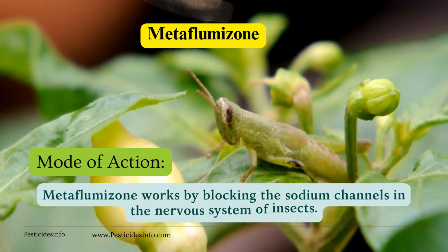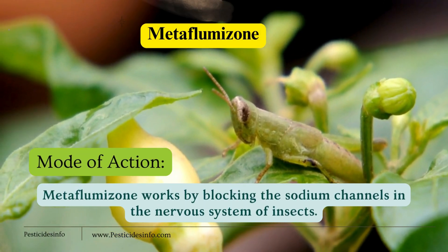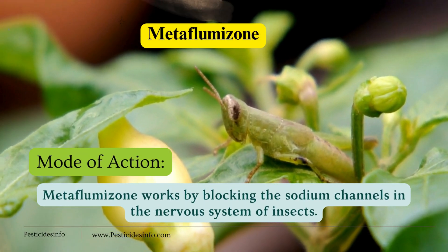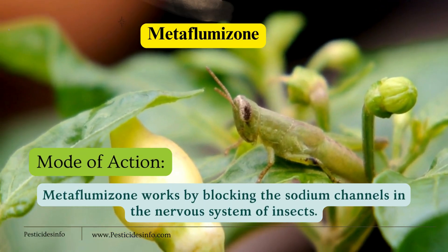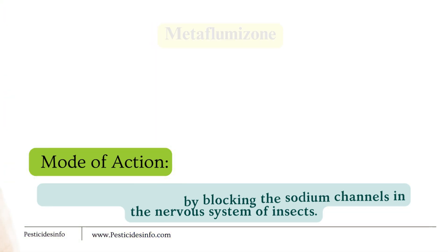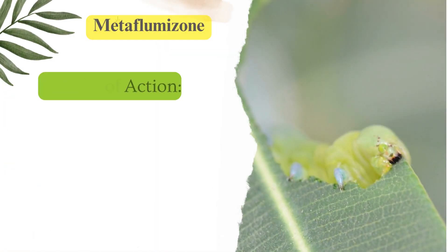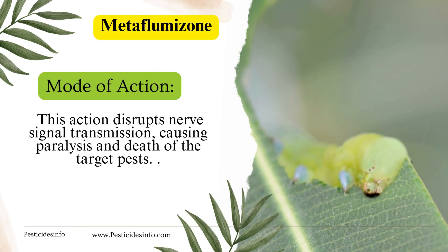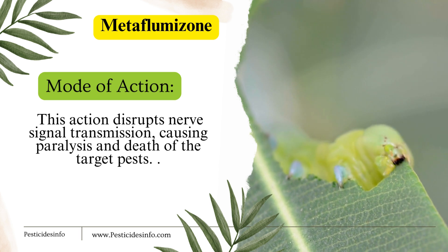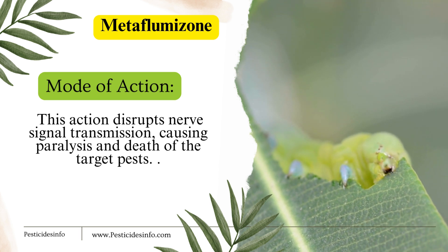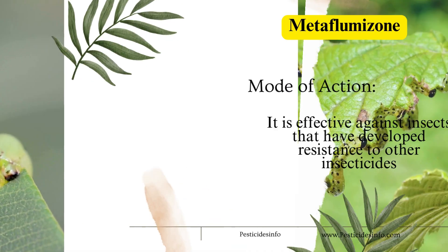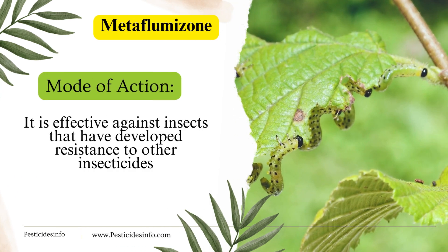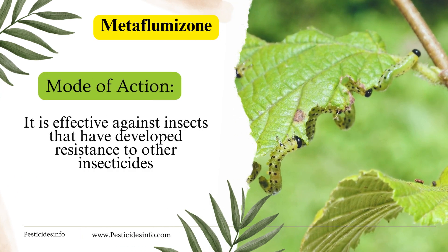Mode of action. Metaflumazone works by blocking the sodium channels in the nervous system of insects. This action disrupts nerve signal transmission, causing paralysis and death of the target pests. It is effective against insects that have developed resistance to other insecticides.